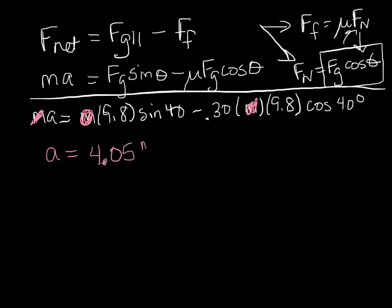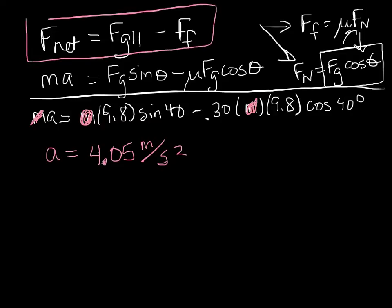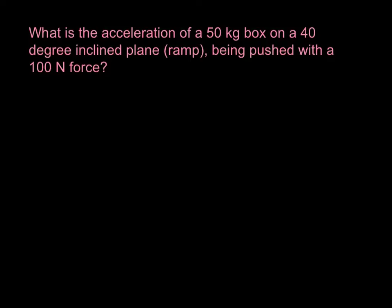That's an acceleration of 4.05 meters per second squared. It's very important when doing these problems to set up our net force equations correctly, because it's not always going to look like that — as you'll see in the next problem. This next problem is a little bit different. We do need the mass of our box because we've got a 100-newton force in the problem, which doesn't have mass times acceleration in it. So it's really important to draw the free body diagram before you start.